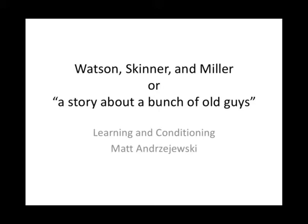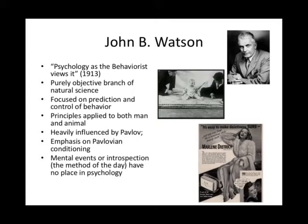There's a fourth really important figure — Ivan Pavlov — but we're going to spend a couple of weeks on him. This is a story of a bunch of old guys, but hopefully it gives us a little historical context for why we're talking about the issues in this class. John Watson writes a really important piece in 1913 called 'Psychology as the Behaviorist Views It,' and in it he claims that psychology needs to be a purely objective branch of natural science.